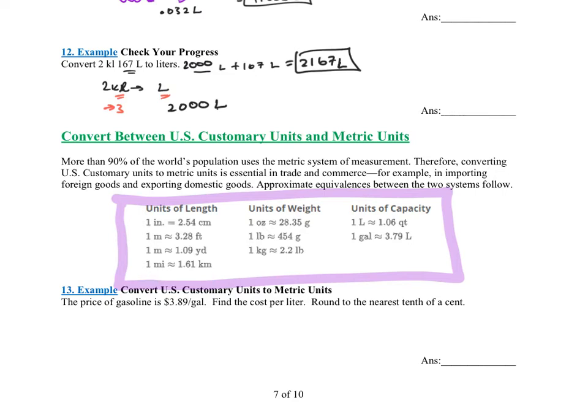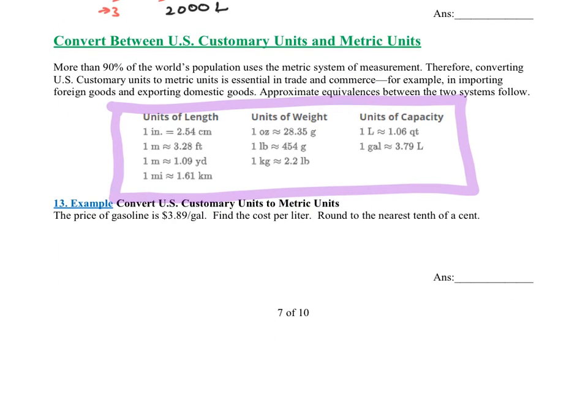Do not use anything other than the conversions you see here. So how do we do these problems? We go back to our ladder, and these are our conversion ratios. Again, I would be putting these on my note card for sure. So it says the price of gasoline is $3.89 per gallon. Find the cost per liter. So we have it's $3.89 for one gallon, and they want to know the cost per liter. So we need to go from gallons to liters.